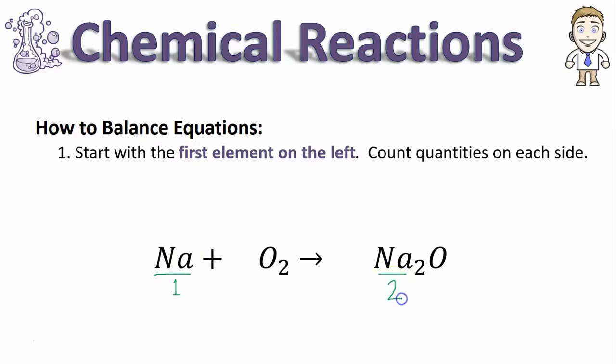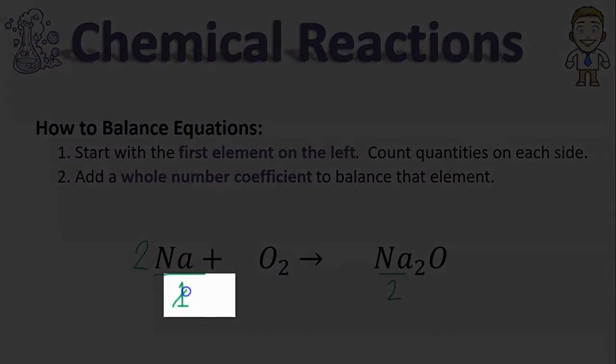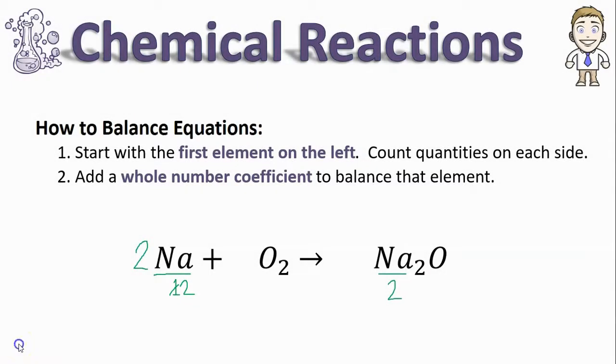If you have to balance them, which in this case we do, we're going to add a whole number coefficient to balance that element. If I've got two Na's in the product side, I also need two on the reactants, so a coefficient of two doubles the amount of sodiums here from one to two, balancing that element. And that's pretty much the whole process.